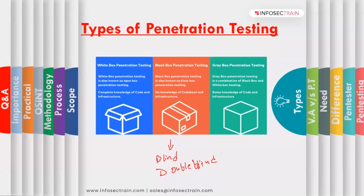In blind testing, you simulate the methodologies of a real attacker — no information is provided, and it is a time-consuming and expensive process. In double blind testing, only a few people in the organization are aware that penetration testing is being conducted. What you are testing here is the organization's security monitoring, incident identification, and response procedures — if any incident happens, how they will respond, and whether they are able to detect your penetration attempt.